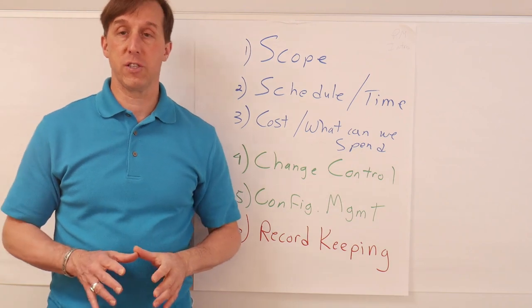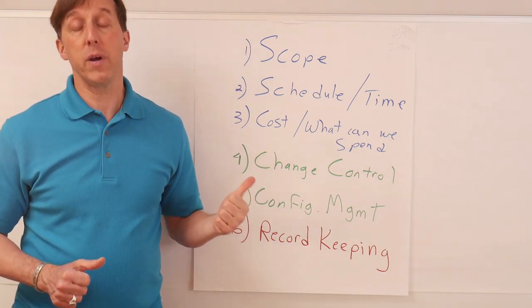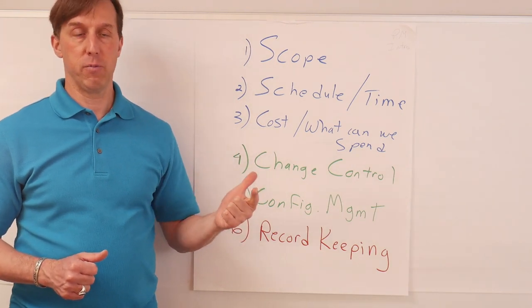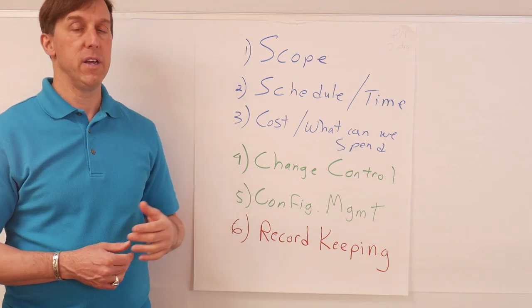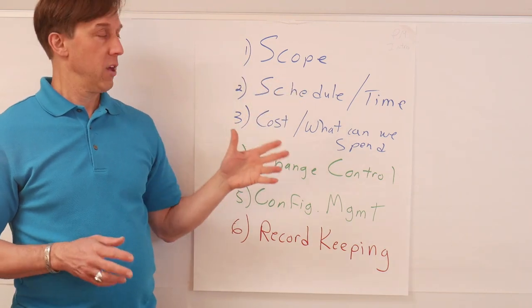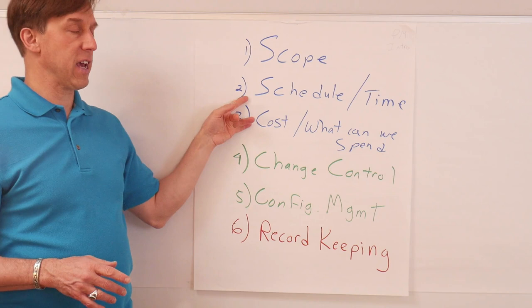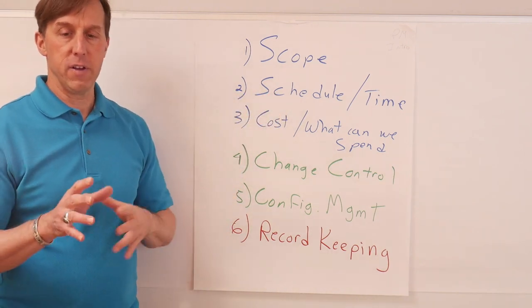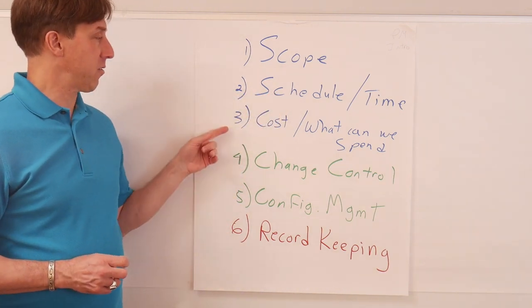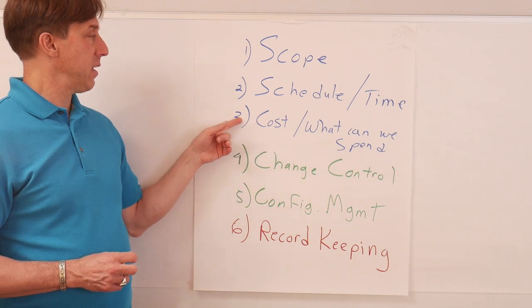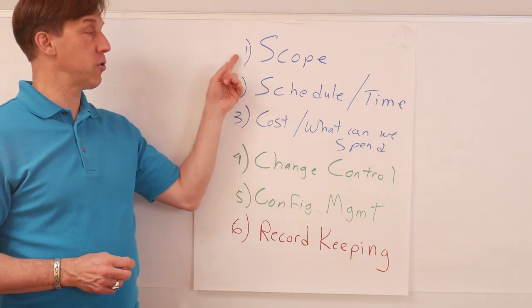Then the next two questions are, how much time do we have to do it? And how much money can we spend? What's our financial allotment in order to complete the work? So again, cost and schedule can be pretty tied together if your labor is fixed. But it's how much can we spend and how long do we have to complete the work?